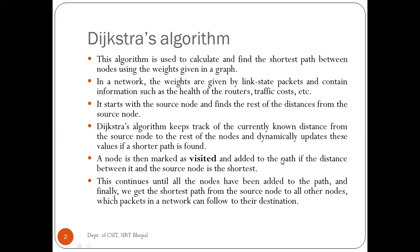Dijkstra's algorithm is used to calculate and find the shortest path between source nodes using the weights given in a graph. This means there is a starting node, and between the starting node and the rest of the nodes, we can find the shortest path, which we calculate on a weight basis. In a network, the weights are given by Link-State packets and contain information such as details about routers, traffic, cost, and so on.